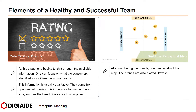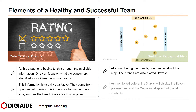The map is very similar to the template shown before. After numbering the brands, one can construct the map and the brands are plotted accordingly. As mentioned, the x-axis will display the flavor, as you can see in the figure, and the y-axis will display the nutritional content.